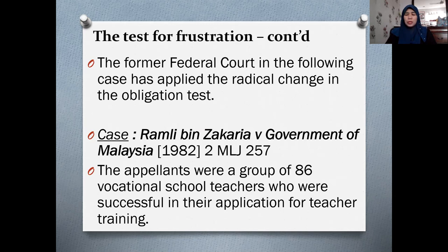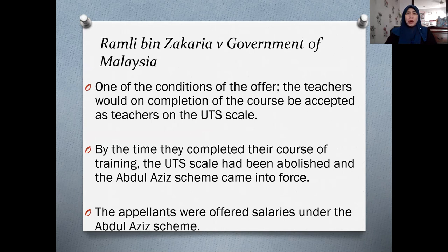One of the conditions of the offer was that, on completion of the course, the teachers would be accepted on the UTS salary scale. However, by the time they completed their training, the UTS scale stated in the contract had been abolished and was no longer in existence. A new scheme, known as the Abdul Aziz scheme, was being enforced at that time, and the teachers were offered salaries under this new scheme.